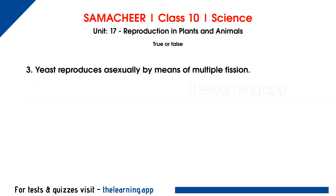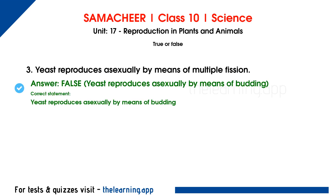Third question: yeast reproduces asexually by means of multiple fission. This is false. The correct statement is: yeast reproduces asexually by means of budding.